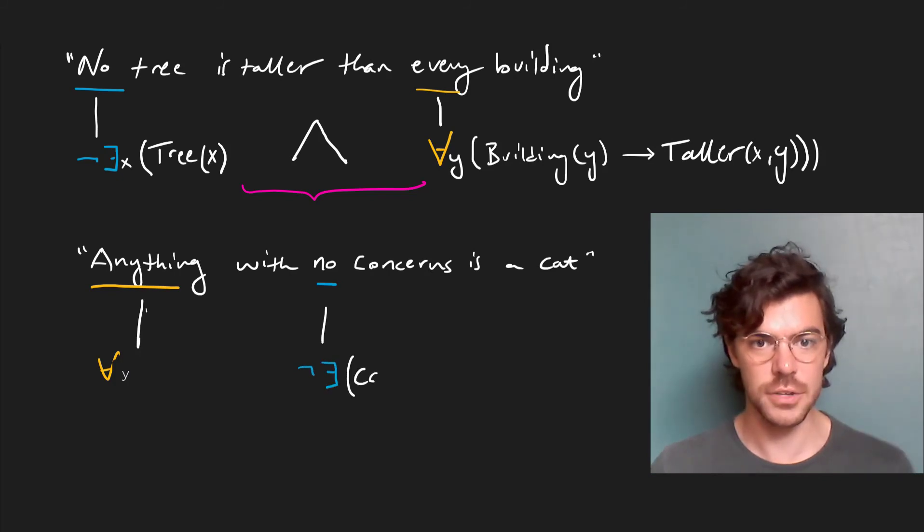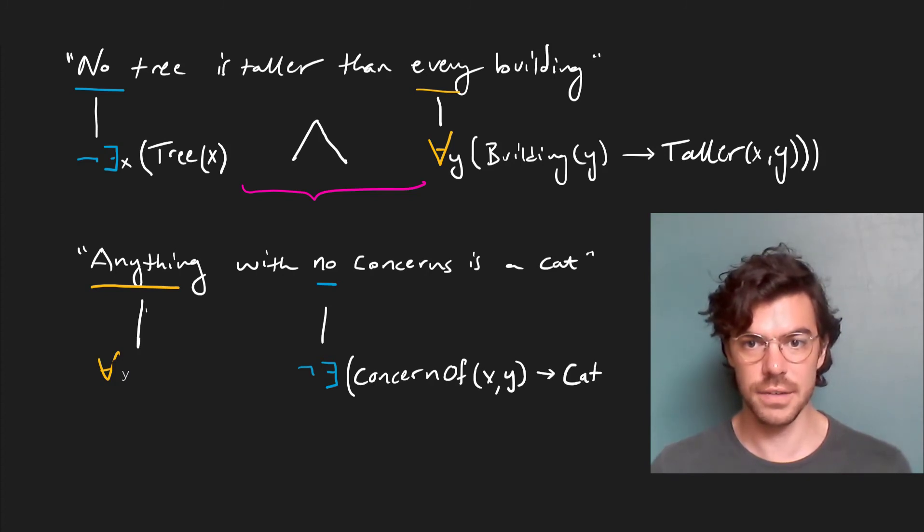And we'll introduce a predicate here, concern of. So this says that x is a concern of y. And then we know that we'll say anything is a cat, so everything is a cat, which just gets us this conditional here. And that's it. There's nothing to fill in in this space right here.